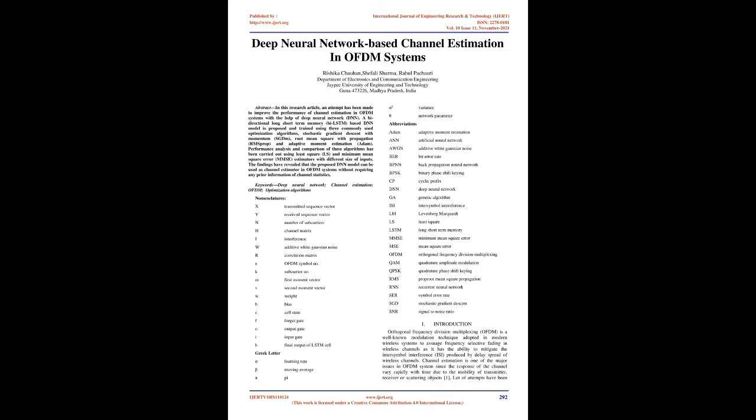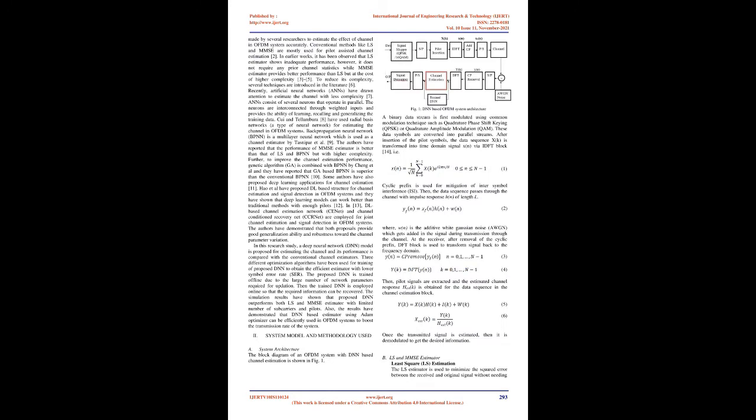I. Introduction. Orthogonal Frequency Division Multiplexing (OFDM) is a well-known modulation technique adopted in modern wireless systems to assuage frequency-selective fading in wireless channels, as it has the ability to mitigate the inter-symbol interference (ISI) produced by delay spread of wireless channels. Channel estimation is one of the major issues in OFDM systems since the response of the channel varies rapidly with time due to the mobility of transmitter, receiver, or scattering objects. Lot of attempts have been made by several researchers to estimate the effect of channel in OFDM systems accurately.